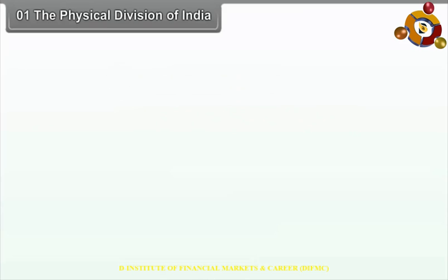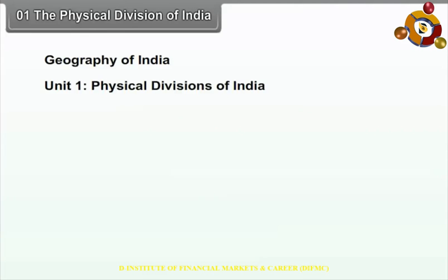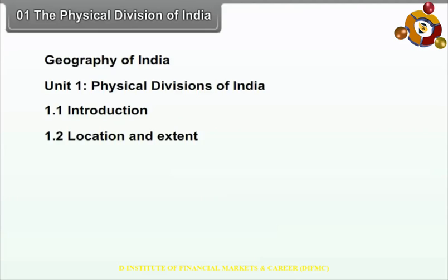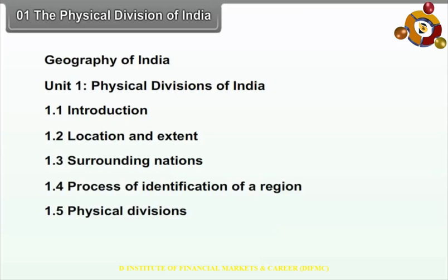Chapter 1: The Physical Divisions of India. We will study the following points in this chapter: 1.1 Introduction, 1.2 Location and Extent, 1.3 Surrounding Nations, 1.4 Process of Identification of a Region, 1.5 Physical Divisions.